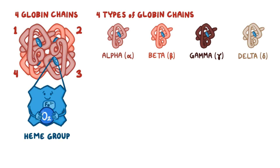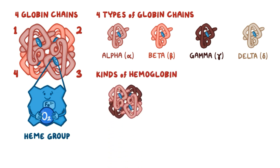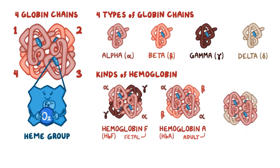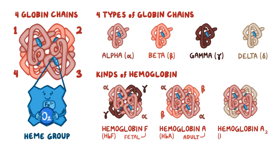These four globin chains combine in different ways to give rise to different kinds of hemoglobin. First, there's hemoglobin F, or HbF, where F stands for fetal hemoglobin, and it's made of two alpha-globin and two gamma-globin chains. Hemoglobin A, or HbA, is the major form of adult hemoglobin, made of two alpha-globin and two beta-globin chains. Finally, hemoglobin A2, or HbA2, amounts for a small fraction of adult hemoglobin in the blood, and it's made of two alpha-globin and two delta-globin chains.